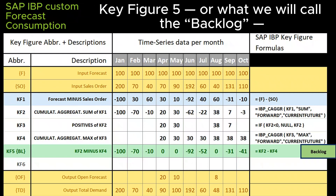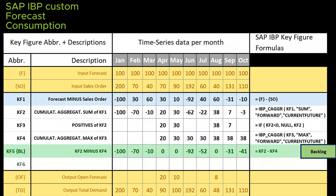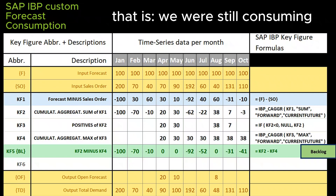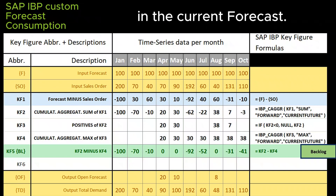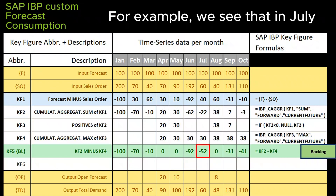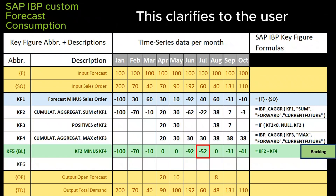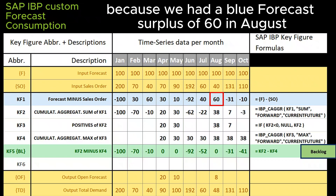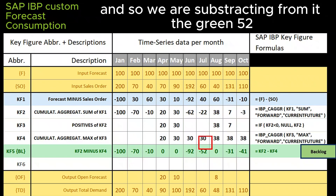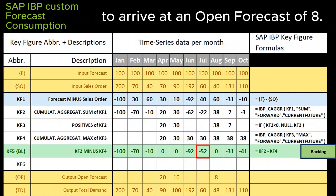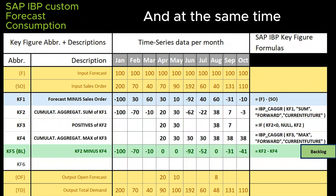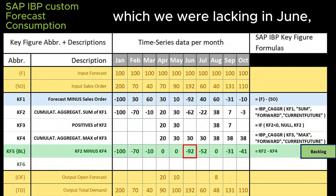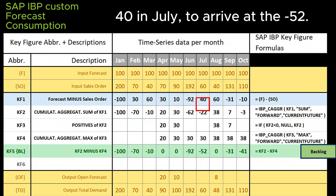Finally, in the green key figure 5, or what we will call the backlog, we can now subtract from our key figure 2 the key figure 4. This backlog clarifies exactly whether or not, and how much, we were still negative — that is, we were still consuming the lack of forecast from the past in the current forecast. For example, we see that in July we are still lacking minus 52 in forecast. This clarifies to the user why we have an open forecast of 8 in August, because we had a blue forecast surplus of 60 in August and so we are subtracting from it the green 52 which we lacked in July, to arrive at an open forecast of 8. And at the same time, the planner can easily see where the green minus 52 is coming from, namely from the green minus 92 which we were lacking in June, which were then partially consumed by the blue 40 in July, to arrive at the minus 52.